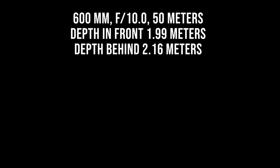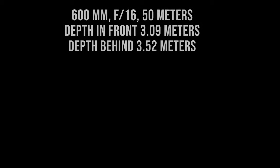If I bump my f-stop up to f/10, I'll have almost two meters of depth of field in front of my subject and just over two meters behind it. If I increase to f/16, that gives me three meters in front and three and a half meters behind — so about six and a half meters of total focal space. If I'm trying to shoot a bird moving really fast toward me or away from me, that extra range makes a significant difference.